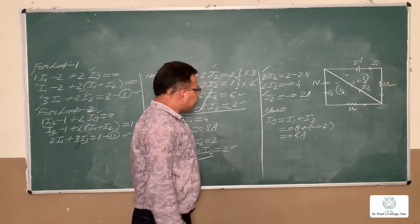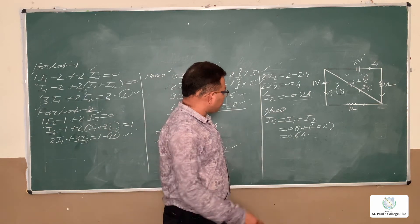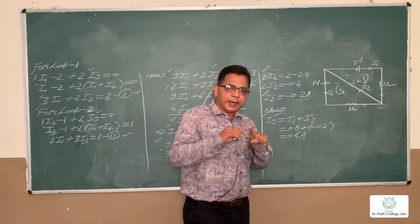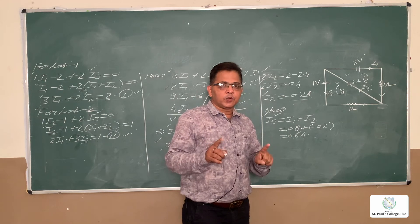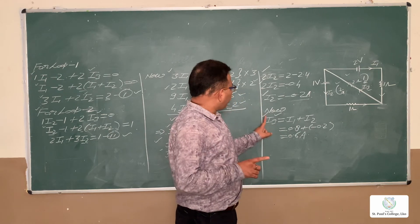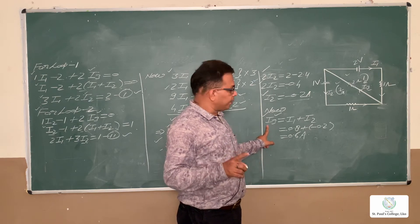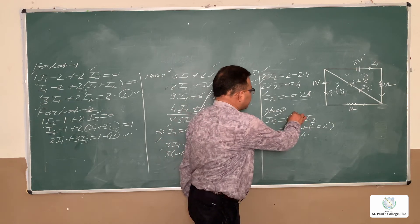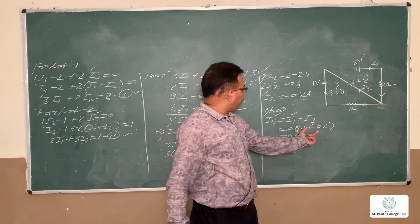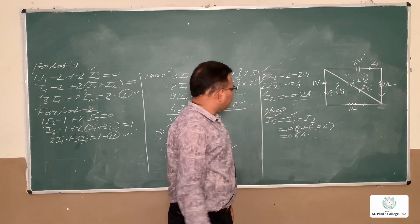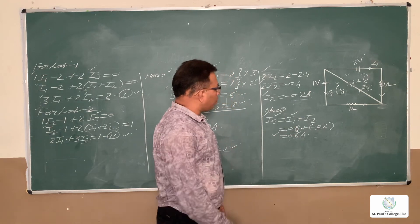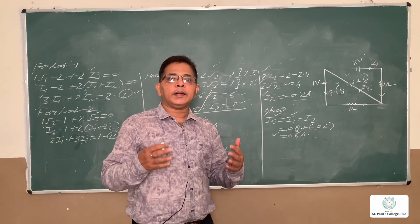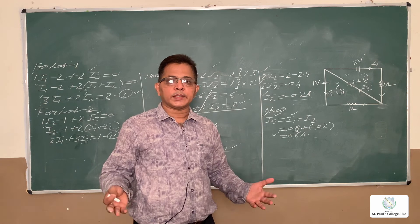Now solving for I3 using Kirchhoff's first law: I3 equals I1 plus I2. With I1 equals 0.8 and I2 equals minus 0.2, we get I3 equals 0.6 ampere. In this way we find the values of all three currents: I1 = 0.8 A, I2 = −0.2 A, and I3 = 0.6 A.